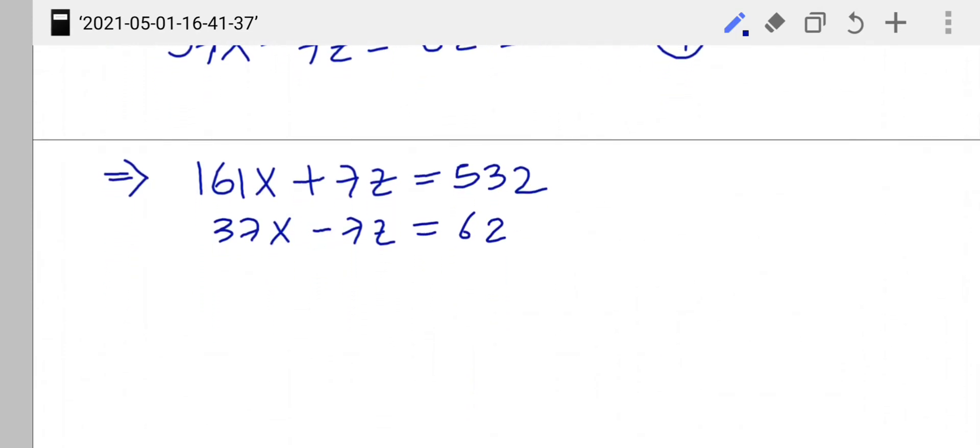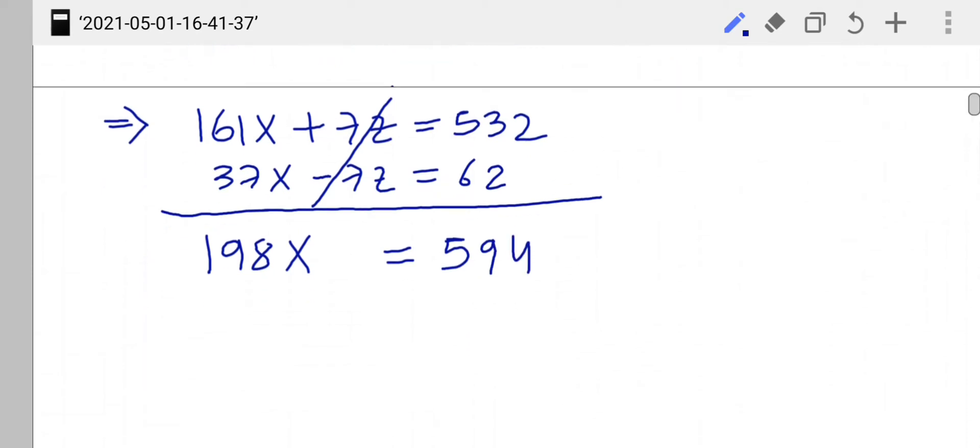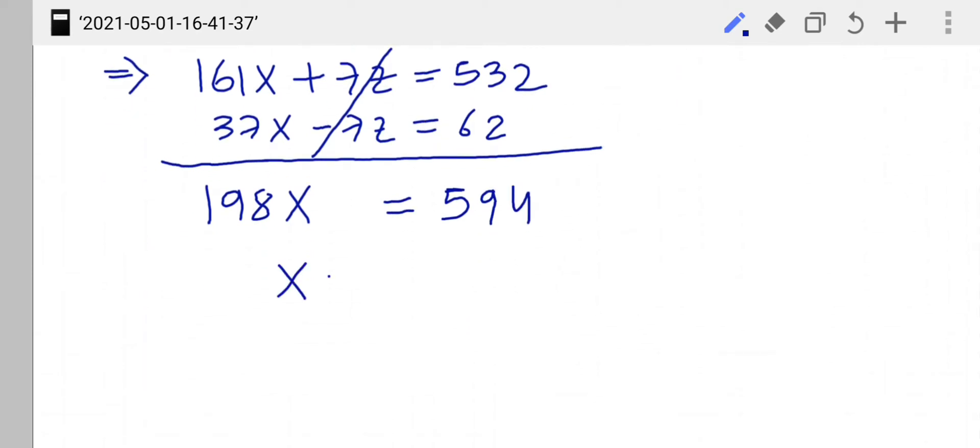Now you see here what we will get? Nothing but these terms again cancel and we will get here 198x is equal to 594. And from here we will get our first solution: x equals to 3.